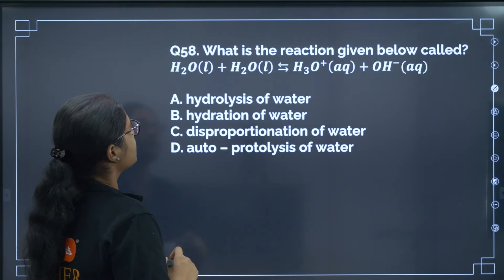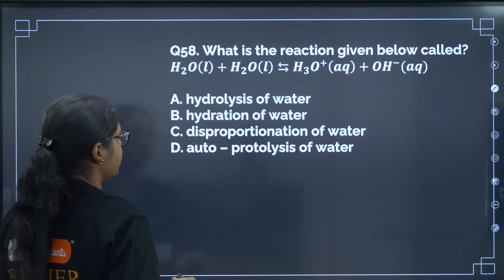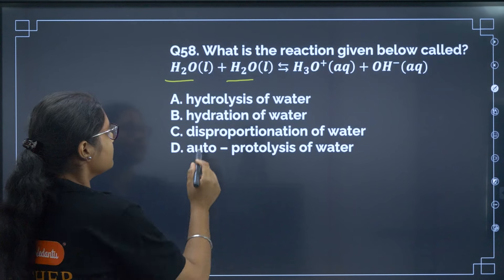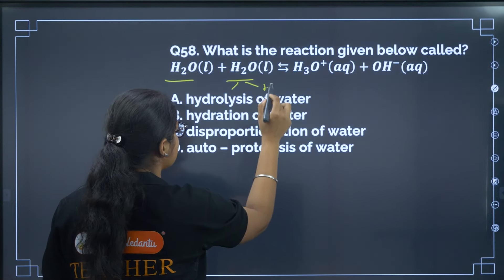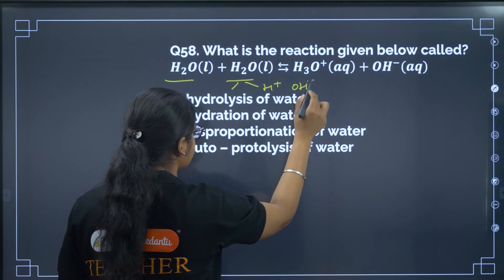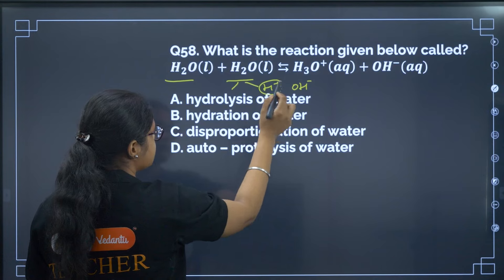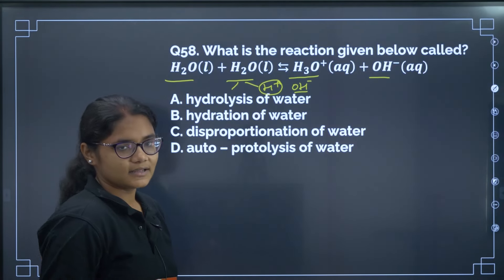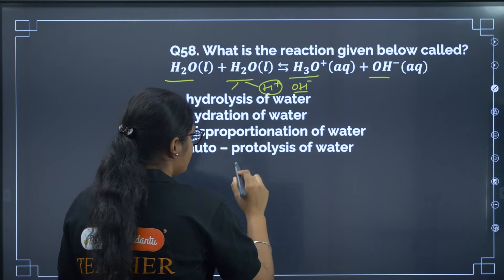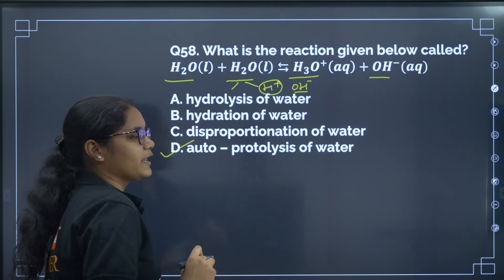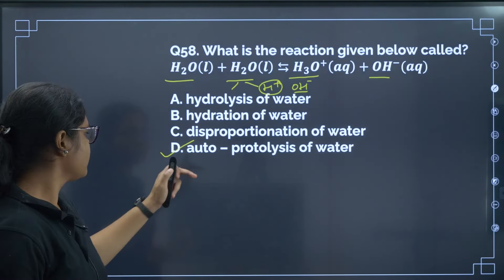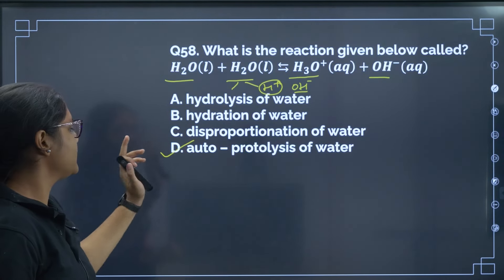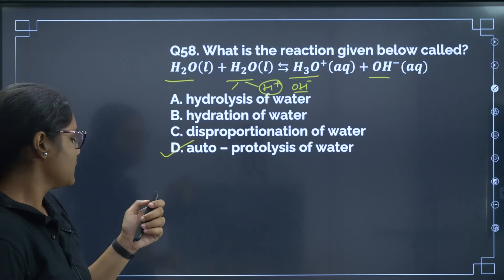Question 58: What is the reaction shown called? Two water molecules react: one dissociates as H⁺ and OH⁻, then the other water molecule abstracts the H⁺ to form H3O⁺, leaving OH⁻. This reaction is called autoprotolysis of water — water is protonated by another water molecule. Correct answer is option B.